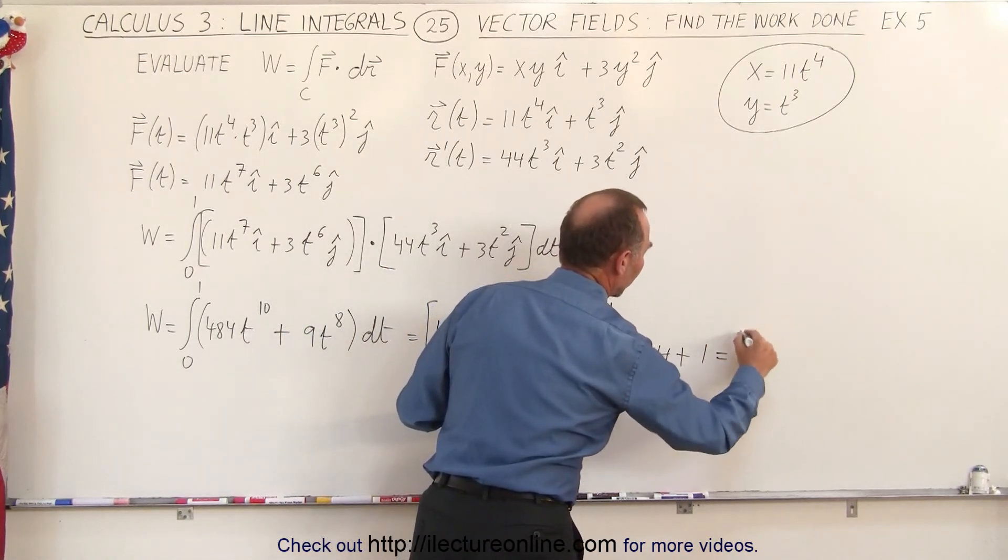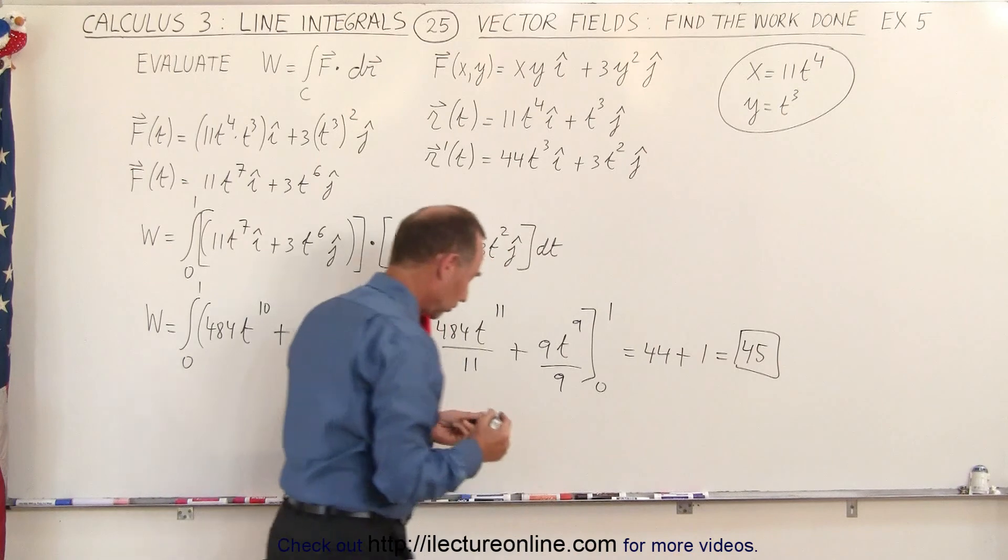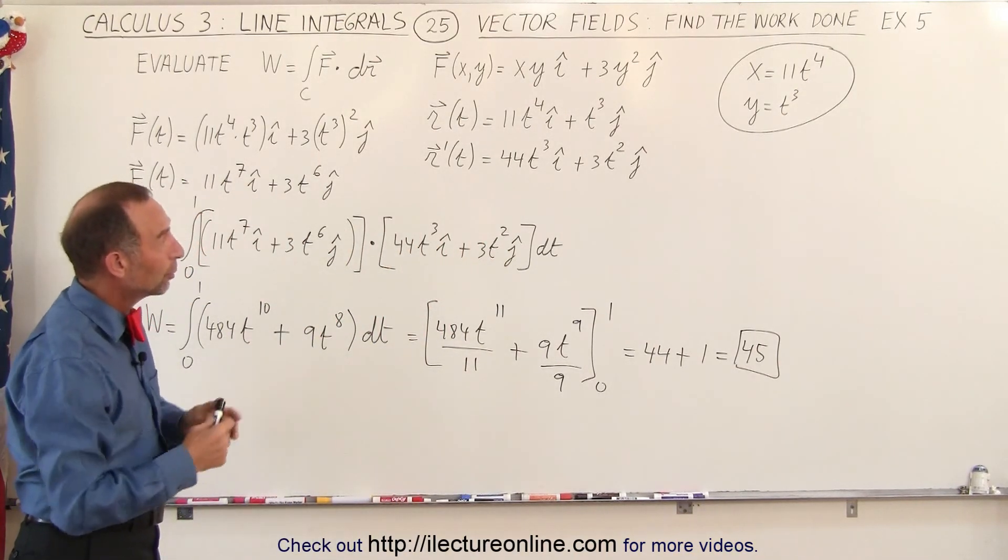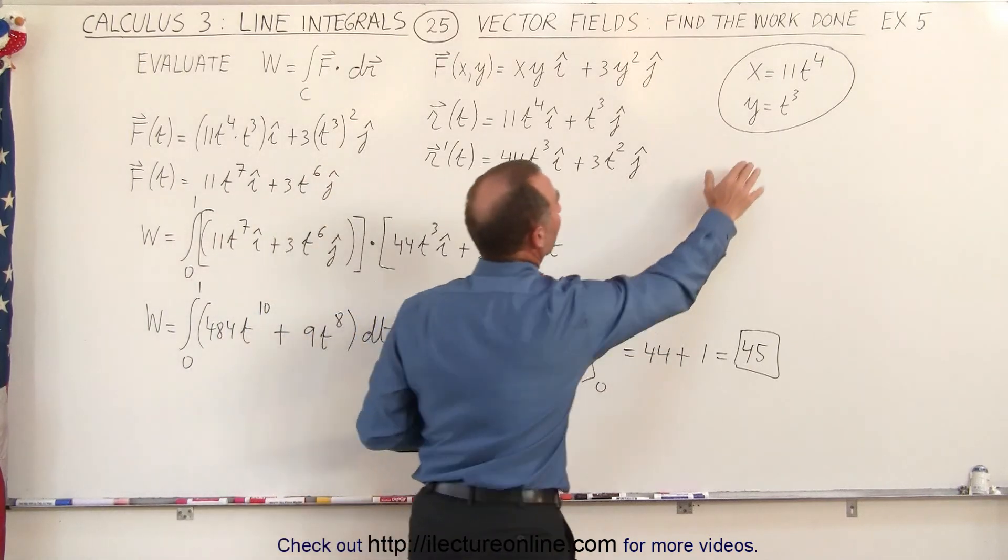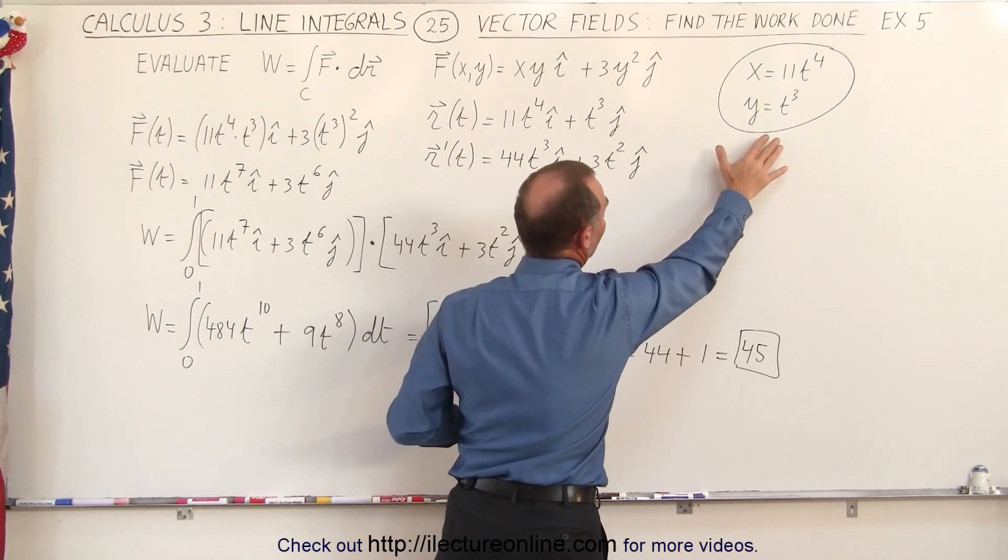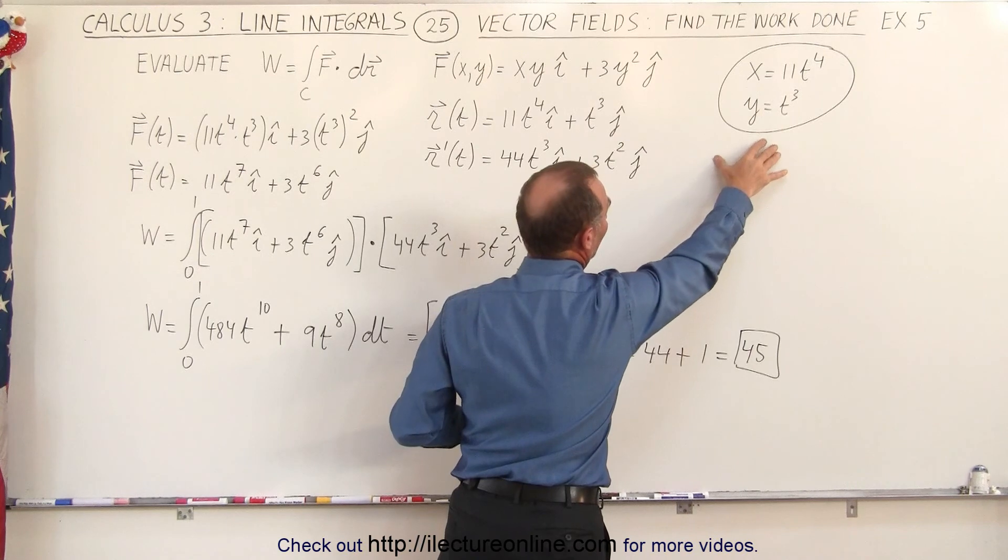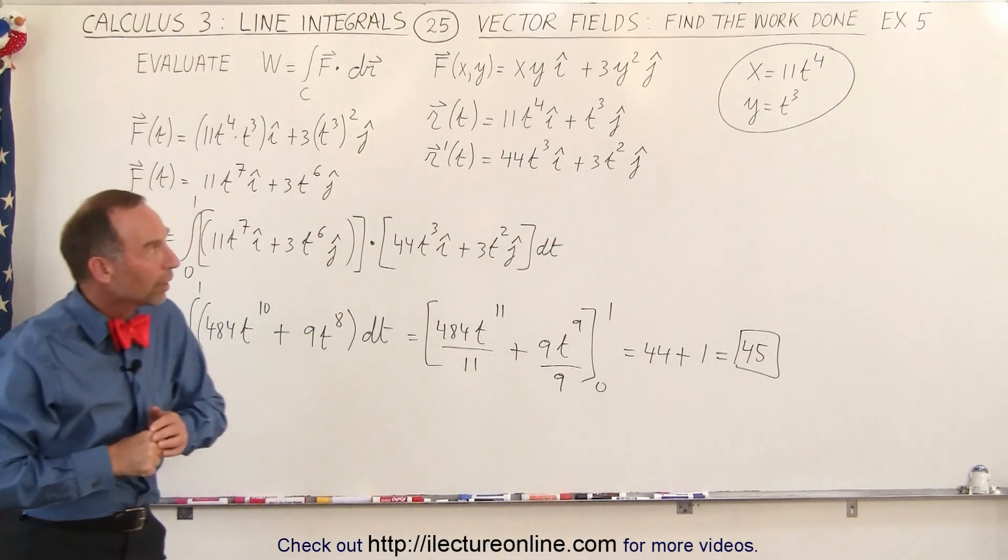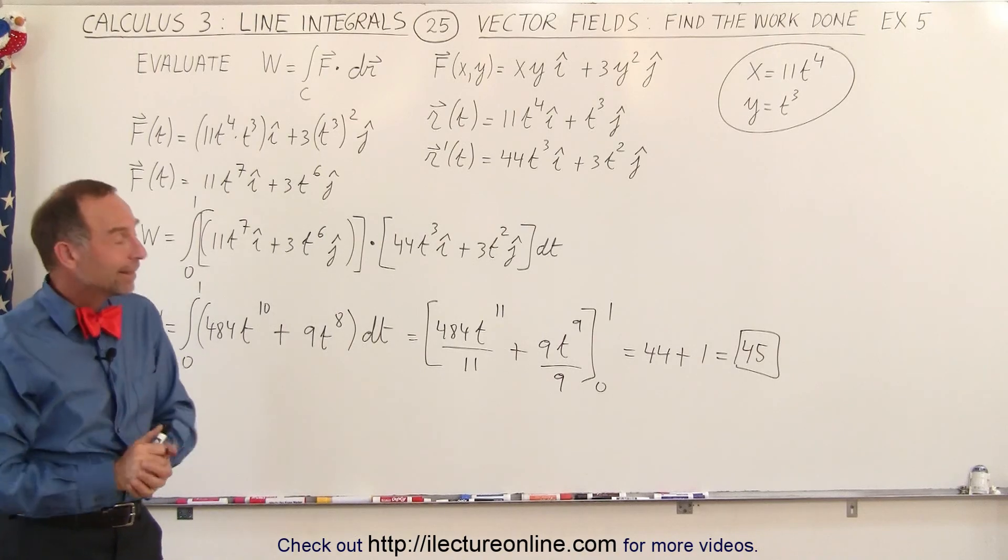And that gives us a total of 45, which is the work done to move through that vector field from point A to point B, defined by the parameterized variables, t, or the, I should say, the parametric equations, defined here by x equals 11t to the 4th, and y equals t cubed. And that's how it's done.